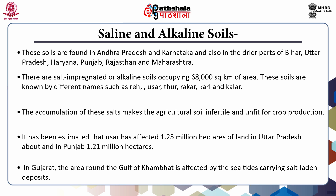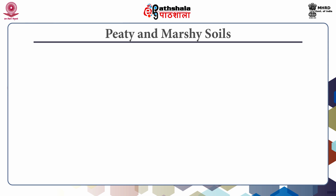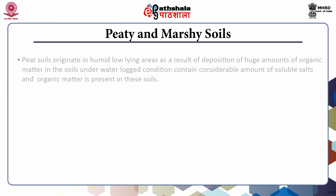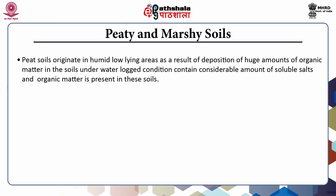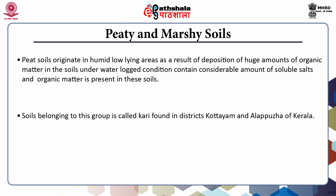The accumulation of these salts makes the soil infertile and renders it unfit for agriculture. Next is peaty and marshy soil. These kinds of soils originate in humid regions as a result of accumulation of large amounts of organic matter in the soil. These soils contain considerable amount of soluble salt and 10 to 40 percent of organic matter. Soils belonging to this group are found in Kottayam and Alleppey districts of Kerala, where it is called Kari.